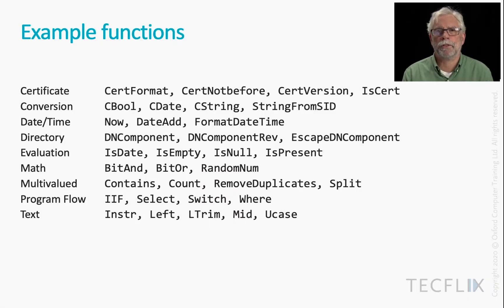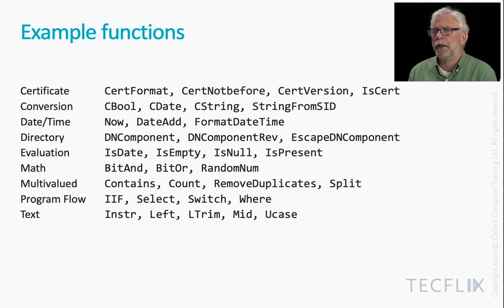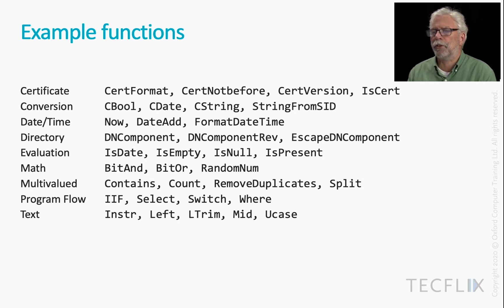Here are some example functions — you've seen a number of them already. I'm simply putting up this slide to give you an idea of the range of functions, and they fit into various categories. You've seen some for formatting dates and for evaluating, such as is null or empty. You've seen a few math ones — you've probably briefly looked at bit-and. I-if we saw, and there are other ways of handling program flow. And then we saw some text ones, like L-trim and U-case. There's a function reference which you can Google easily enough for Azure AD Connect, so you'll find the functions you need when you need them.